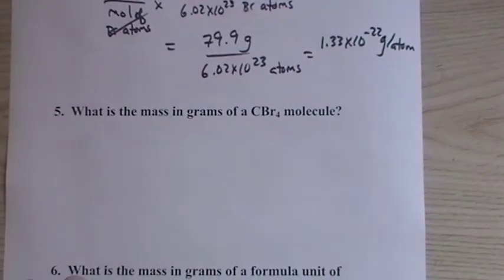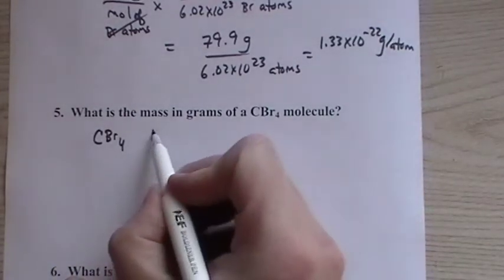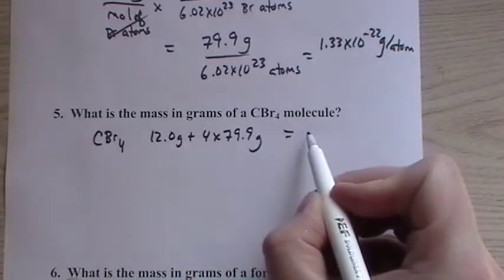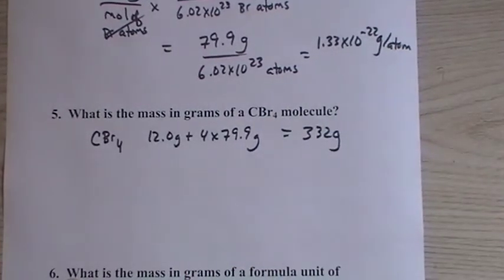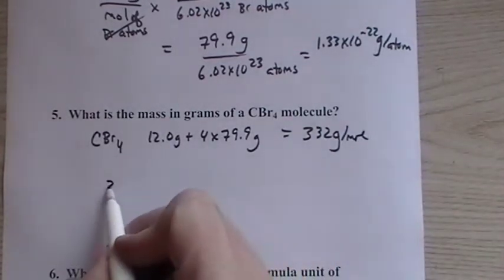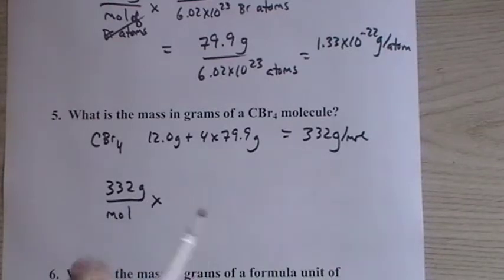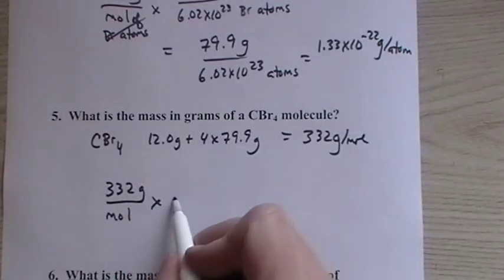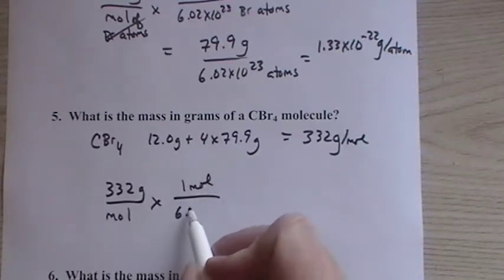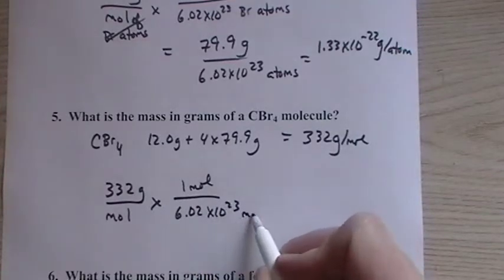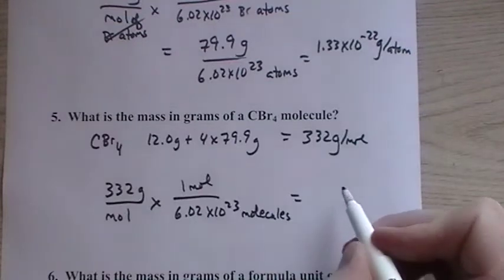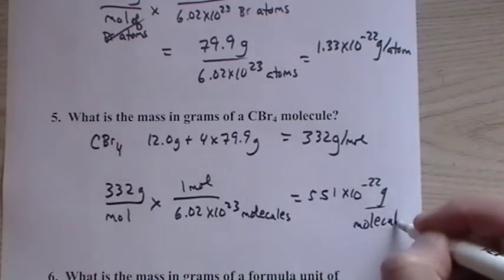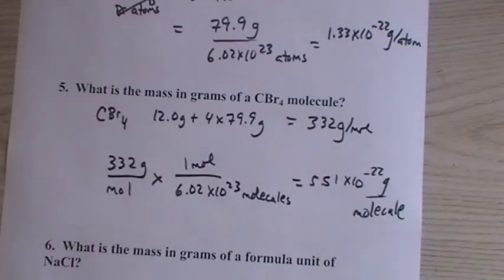Now let's do it for a molecule. For carbon tetrabromide CBr4, it's 12 grams plus 4 times 79.9. You could change that to 80 if you like. So it's 332 grams per mole. This comes up to be 5.51 times 10 to the minus 22 grams per molecule.